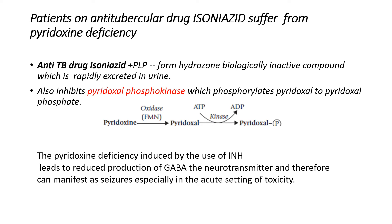Isoniazid can form a complex called hydrazone along with pyridoxal phosphate (PLP). This hydrazone complex is biologically inactive and is rapidly excreted in the urine, so PLP is lost in the urine and the patient will suffer from deficiency.